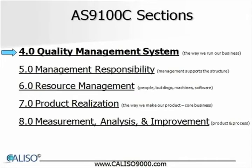Section 4 is where the requirements begin. Section 4 is titled Quality Management System. A quality management system is the organizational structure, procedures, processes, and resources needed to implement quality management. Think of a quality management system as a business management system, or simply the way you run your business. Although there are a few additional requirements to the ISO 9001 standard in Section 4, they are minor in nature and do not require significant effort to implement.